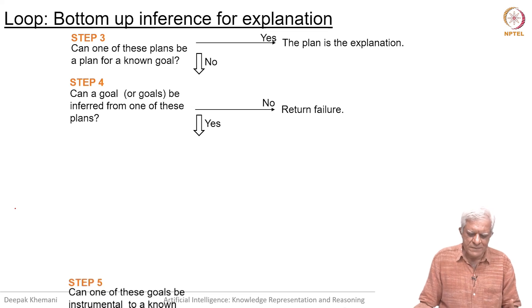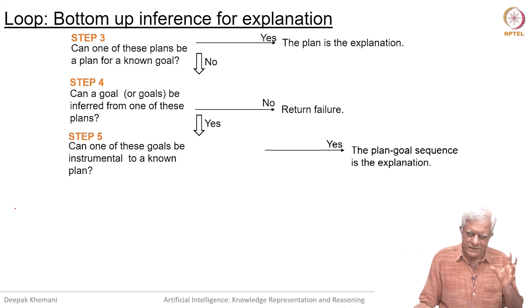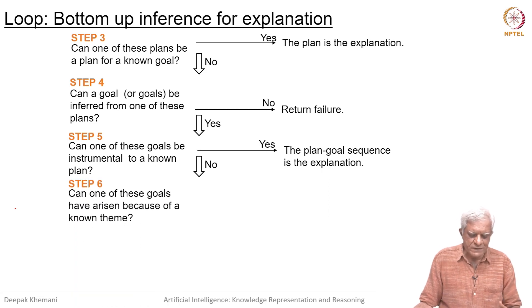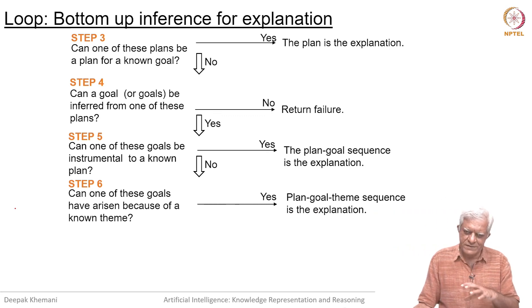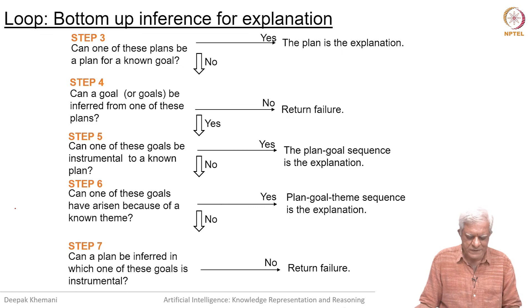If a goal or goals can be inferred from one of these, then can one of these goals be instrumental to a known plan? Is there a plan that you were expecting and can this goal be instrumental in that? Then the goal plan sequence is the explanation. If no, then can one of these goals have arisen because of a known theme? Themes are these constant things like hunger is a theme, where you know that people periodically get hungry. Then if you say that John is hungry, you do not have to think any further to understand why John is hungry, because people often get hungry.